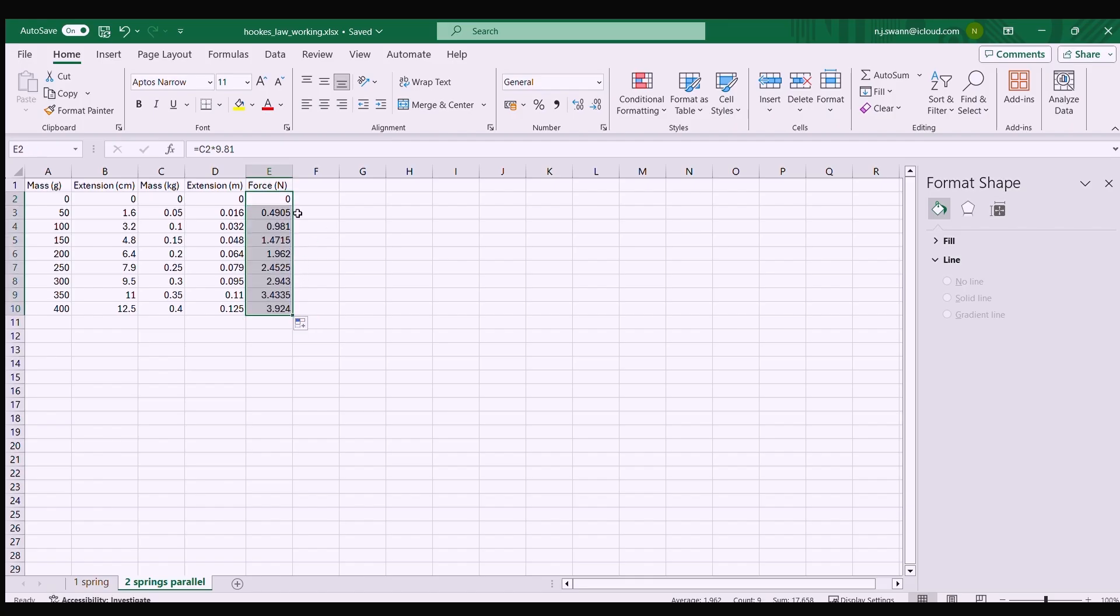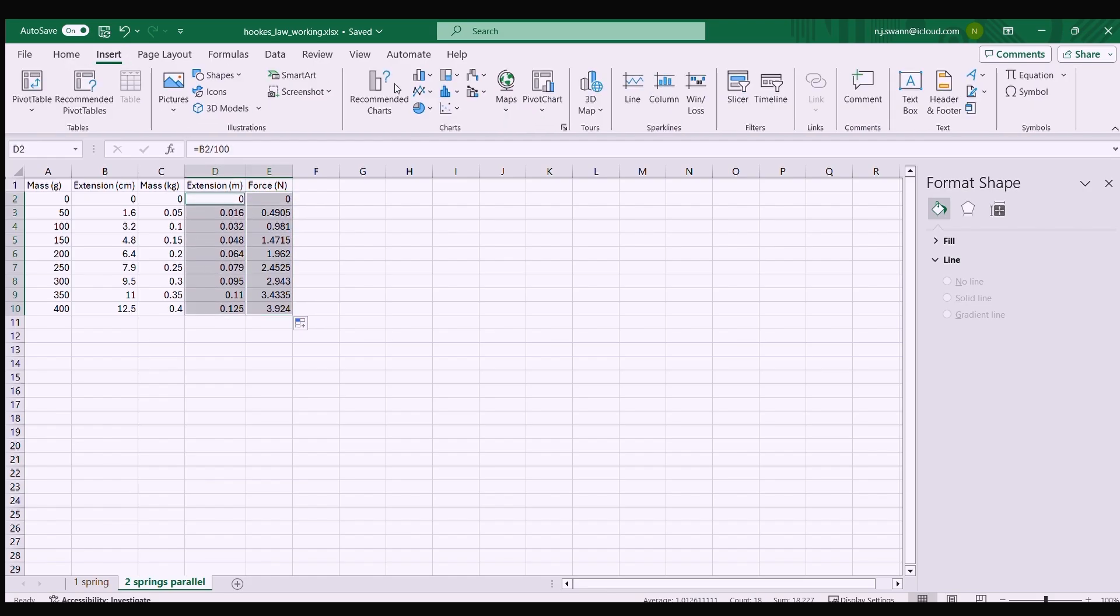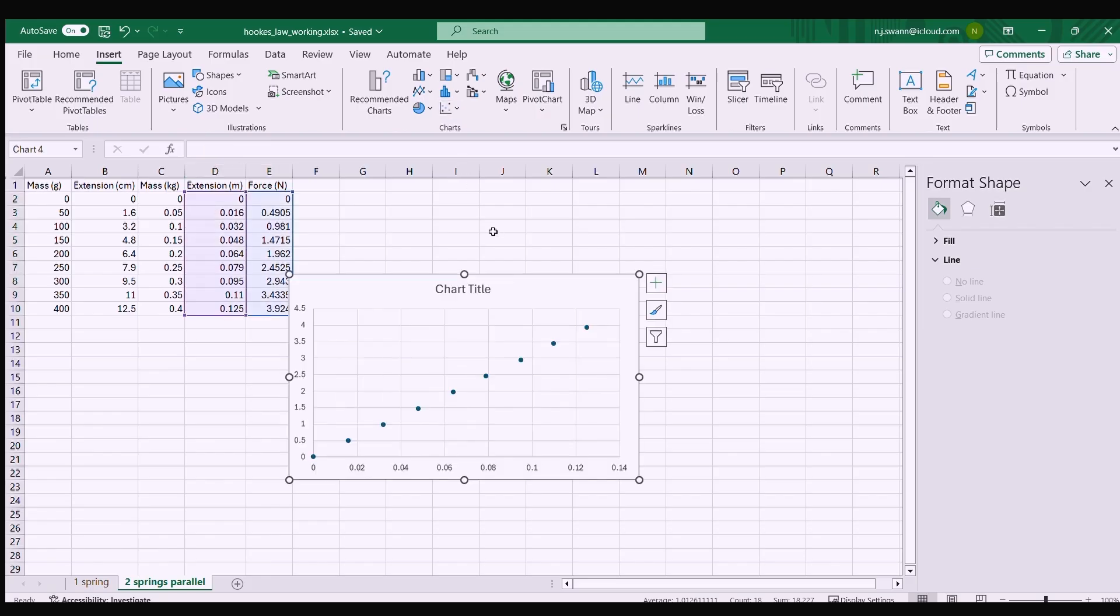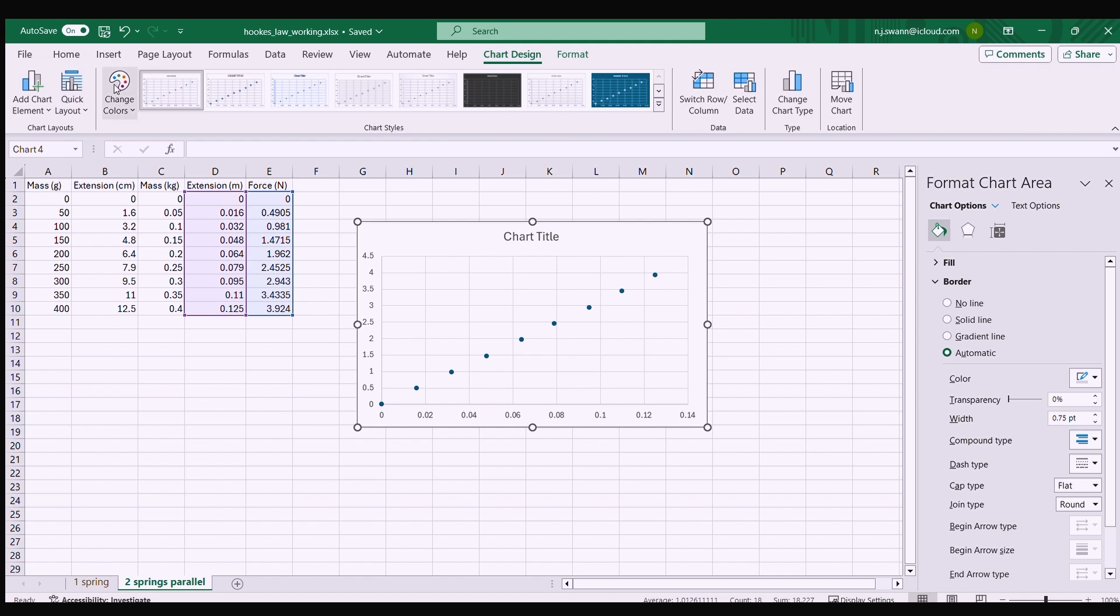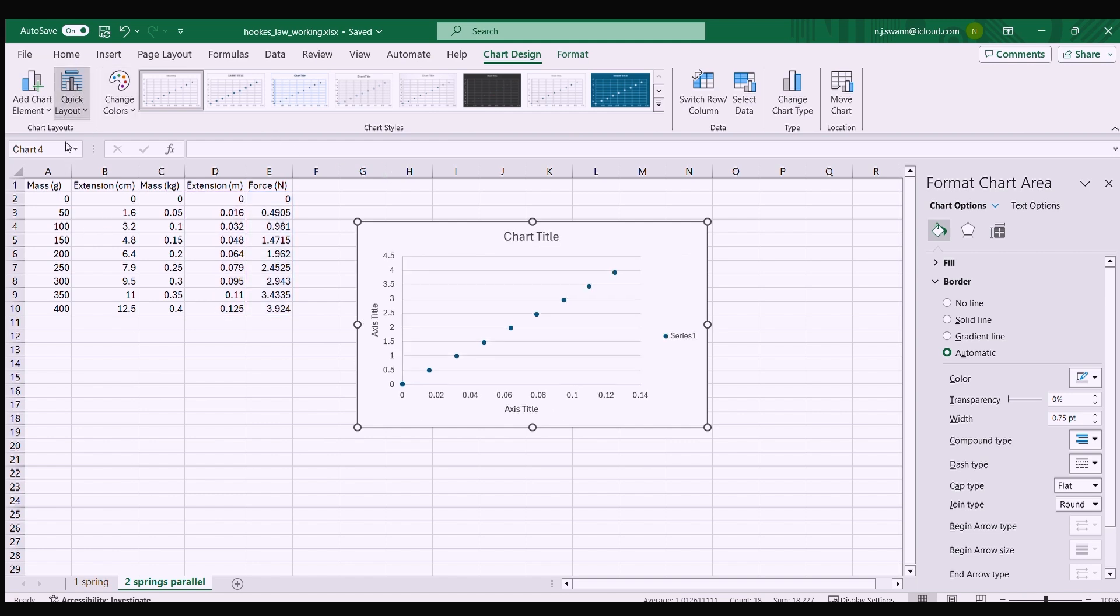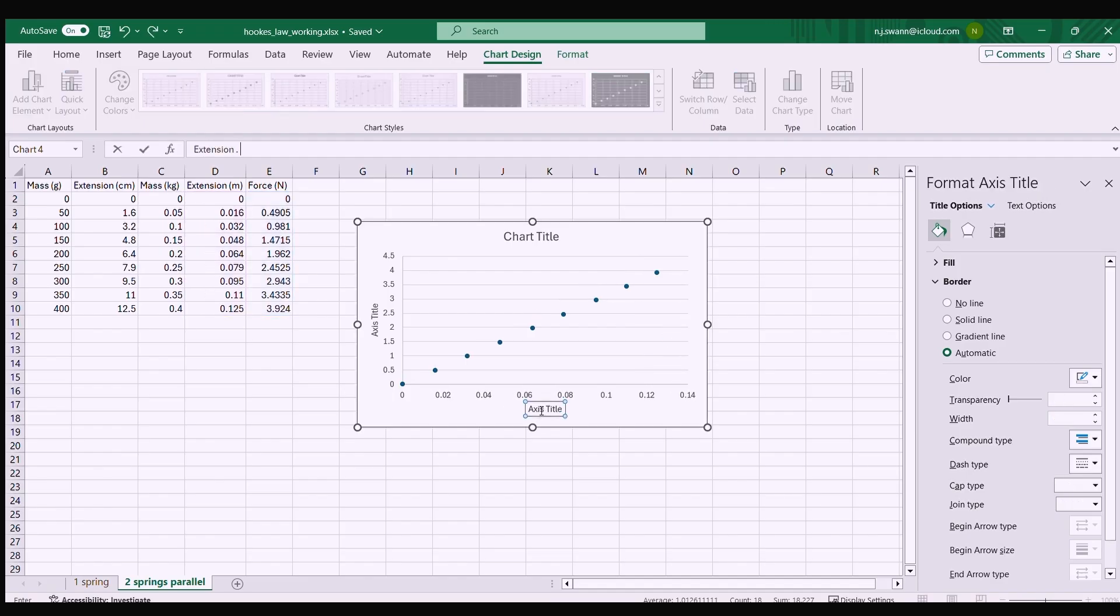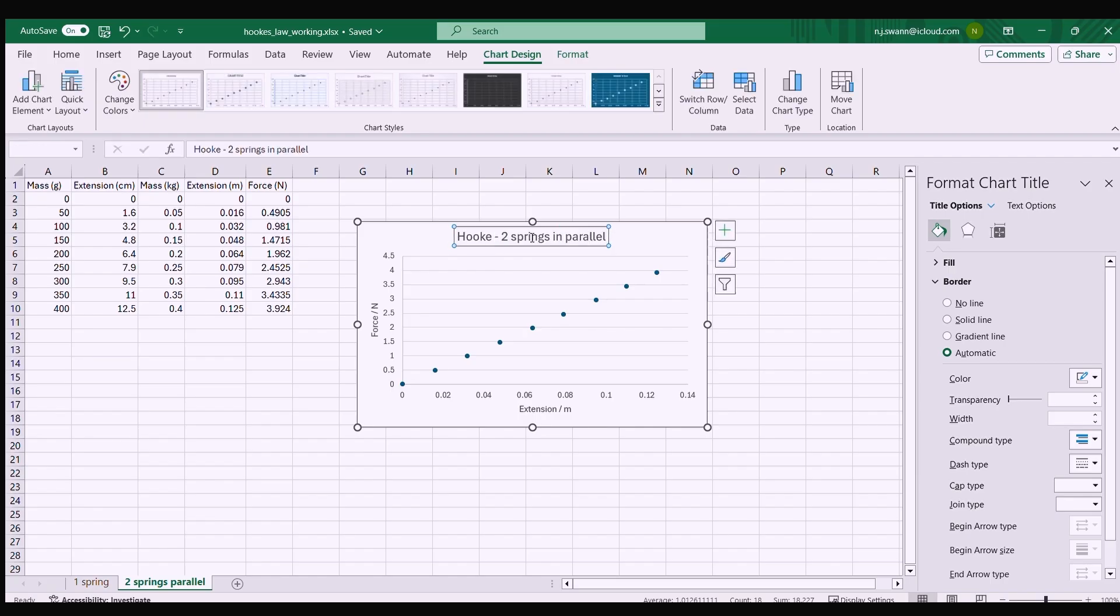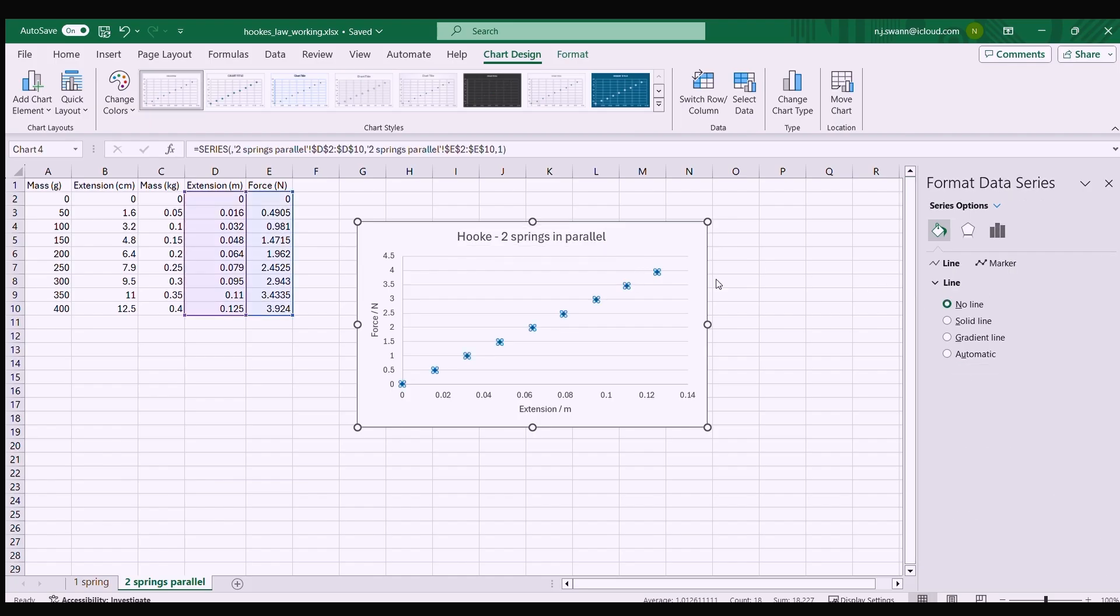For my plot I want force on the y-axis against extension on the x. I can go insert scatter plot, it looks lovely so let's label it up so we can remember what we've plotted. On the x-axis we have extension in meters, on the y-axis we've got force in newtons. Now we can apply our linear fit to the data by right clicking on the data set, click add trend line, and then display equation on chart.